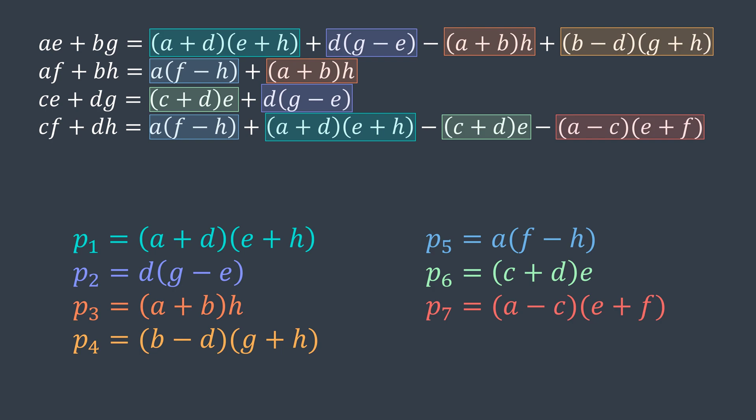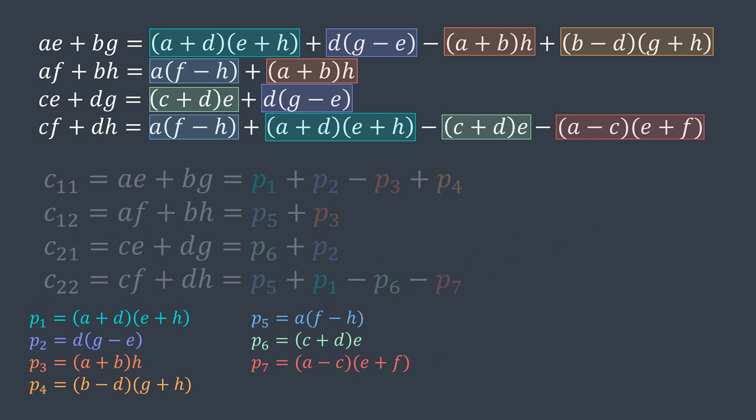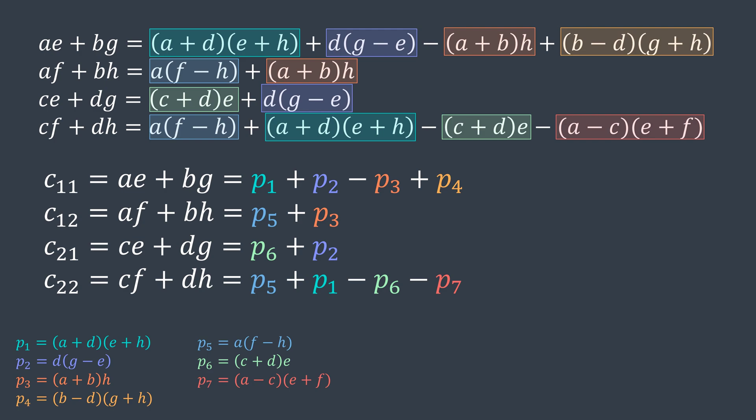You can notice that we needed seven products only instead of eight. And even if we need to do extra additions and subtractions, those are way faster to do than a multiplication, so it's fine. And you can see that we can write c11 as p1 plus p2 minus p3 plus p4, c12 as p5 plus p3, c21 as p5 plus p6, and c22 as p5 plus p1 minus p6 minus p7.